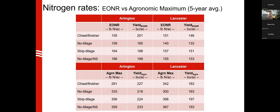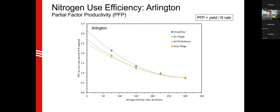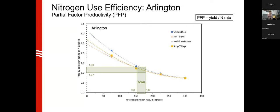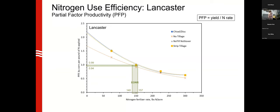This is the principle behind the MRTN — maximum return to nitrogen — which takes into account the price of corn and nitrogen. Looking at partial factor productivity (PFP), or bushels of corn per pound of nitrogen applied, at Arlington the EONR range of 155 to 186 pounds gave a PFP range of 107 to 130 bushels per pound. At Lancaster the range is narrower. Different tillage systems, even with soil temperature differences, perform decently across both sites.